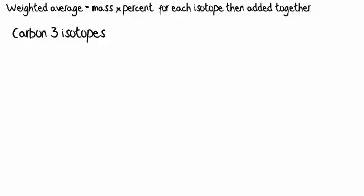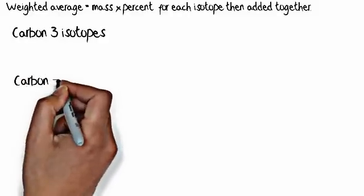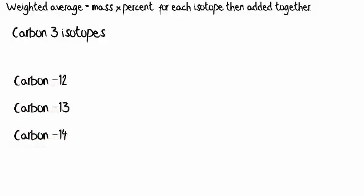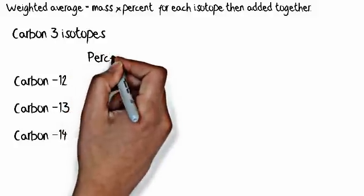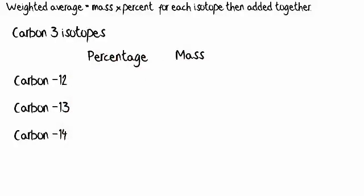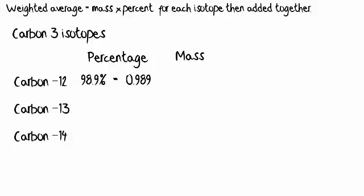As we said, carbon has three primary isotopes: carbon-12, carbon-13, and carbon-14. We're going to make two columns—percentage and mass. The percentage of carbon-12 is 98.9 percent.